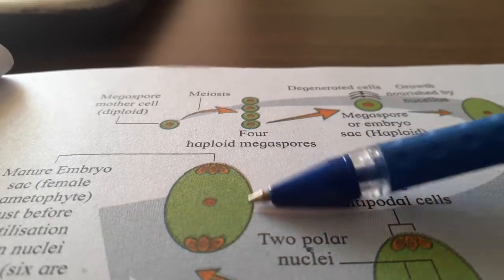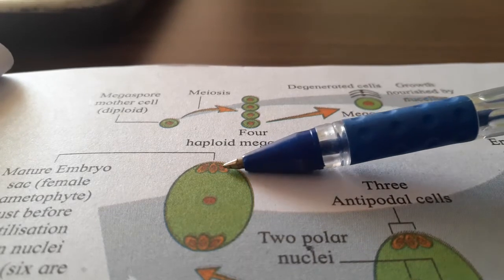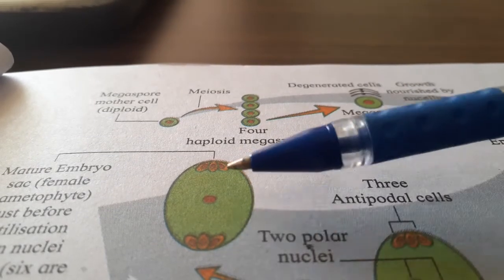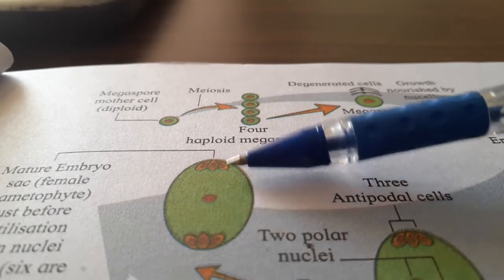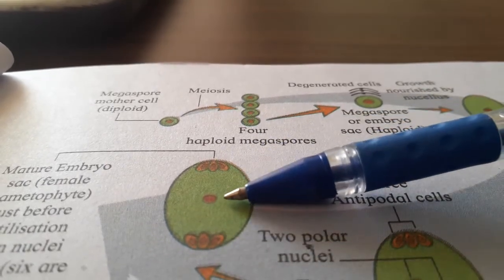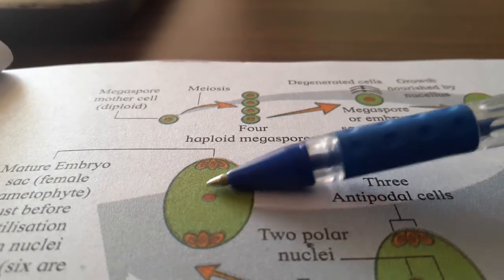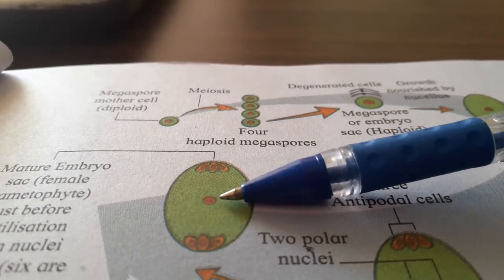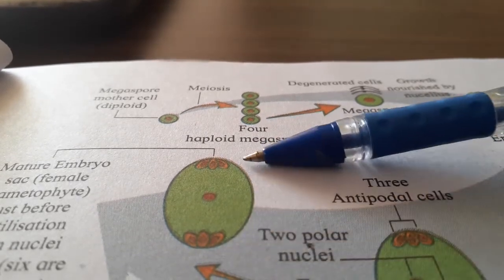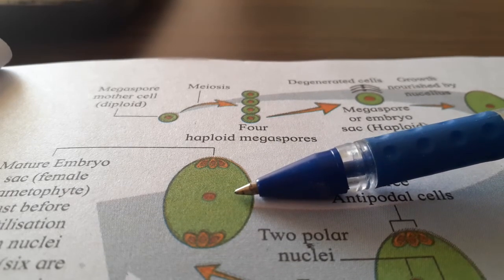This female gametophyte is made up of 3 plus 1 plus 3 — that is 7 cells total. It is 7-celled and 8-nucleated because the polar nucleus at the centre consists of 2 nuclei. So this embryo sac is called a 7-celled and 8-nucleated structure.